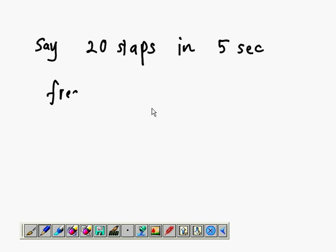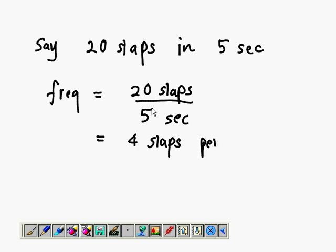Number of slaps per second. Let's say 20 slaps within 5 seconds - the frequency is 20 over 5. Do you notice that if I want frequency, I put the slaps on top and time below? So 4 slaps per second.